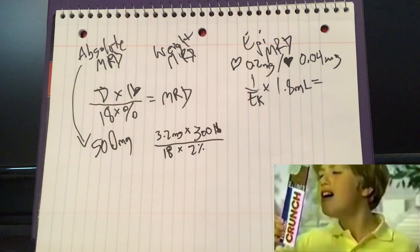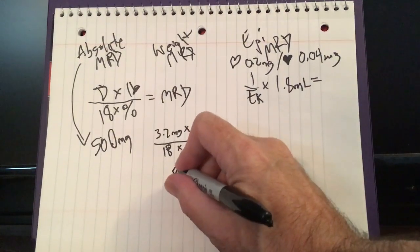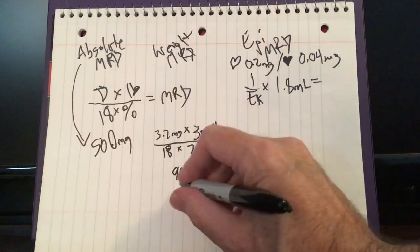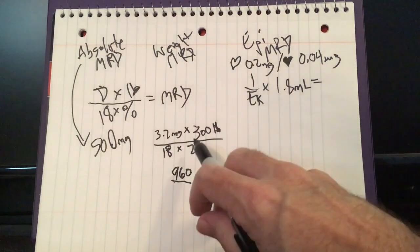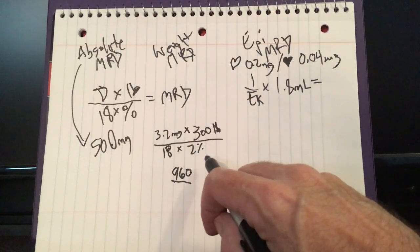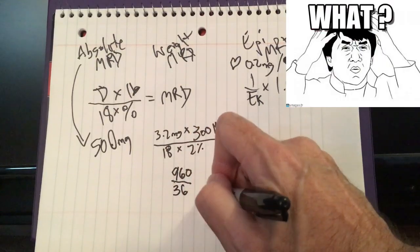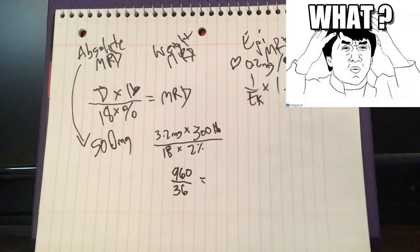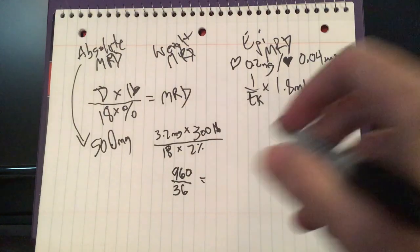3.2 times 300. And make sure you do the top first and then the bottom, don't mix your math. So we have 960 all over, and then 18 times 2. And you know like I said before I'm calling this percent because we just throw it in there as 2 percent, don't move the decimal or anything. This might confuse some people who are good at math. Please bear with me. And what does that equal? 960 divided by 36 is 26.6.